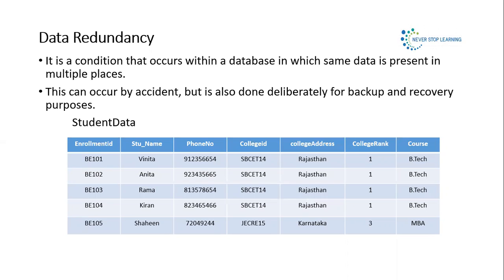Data redundancy is a condition that occurs within a database in which the same data is present in multiple locations. Basically, if we are having multiple copies of the same data in our database, it will lead to data redundancy. This problem mainly occurs when our database is not normalized — I'm going to cover normalization in the next video.